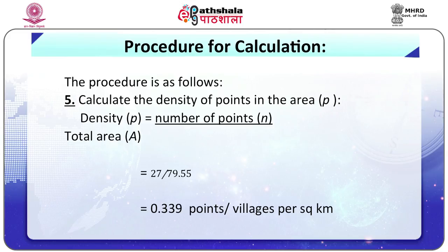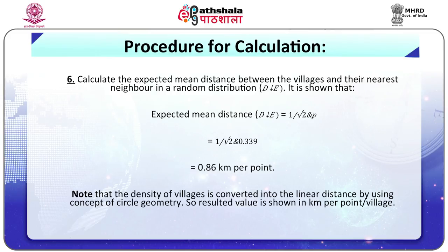Step 5 — Calculate the density of points in the area (P). Density P = N/A = 0.339 points (villages) per square kilometer. Step 6 — Calculate the expected mean distance D̄E in a random distribution: D̄E = 1 / √P = 1 / √0.339 = 0.86 km per point. Note that the density of villages is converted into linear distance using the concept of circle geometry, so the resulting value is in km per point or village.